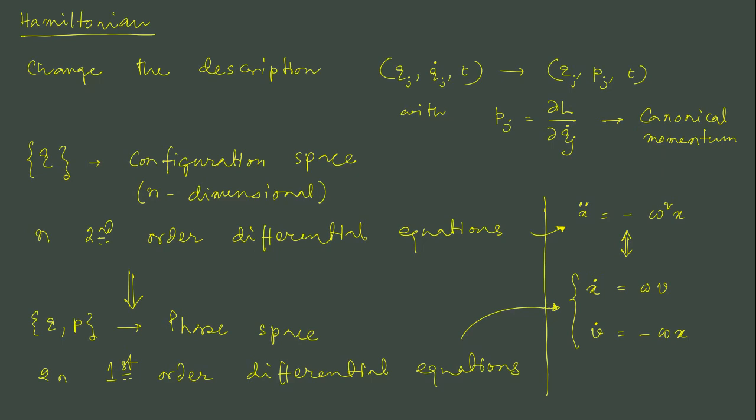Now when we make this change from configuration to phase space, from the q's and q dots to the q's and p's, we similarly introduce the change in the function that we were dealing with. We will not deal with Lagrangian anymore. We will deal with Hamiltonian. Hamiltonian would be an equivalent function which gives us these 2n first order differential equations and it will be functions of q's and p's.